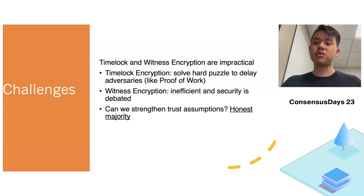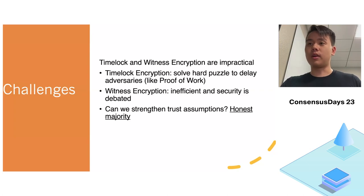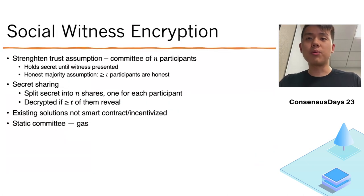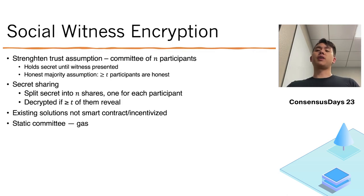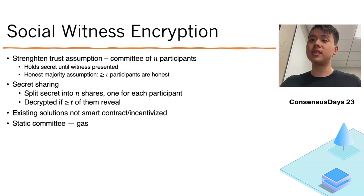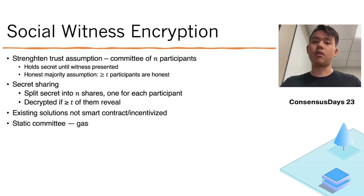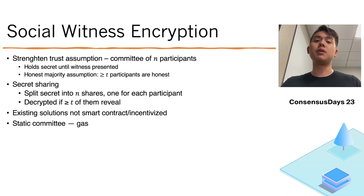If we strengthen trust assumptions by leveraging the honest majority assumption already present in many blockchain-validated committees, we propose social witness encryption. We strengthen the trust assumption by assuming a partially trusted committee of participants that hold the secret until a witness is presented — assuming at least T participants in this committee are honest. We use secret sharing to split the secret into N shares, one for each participant, and it can only be decrypted if at least T of them reveal their shares.